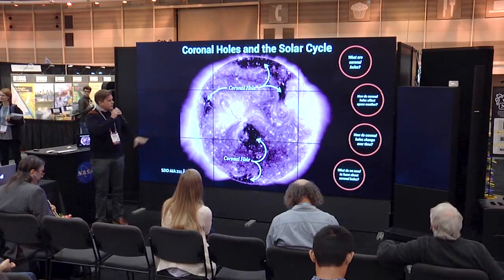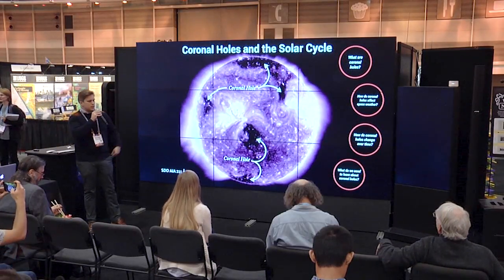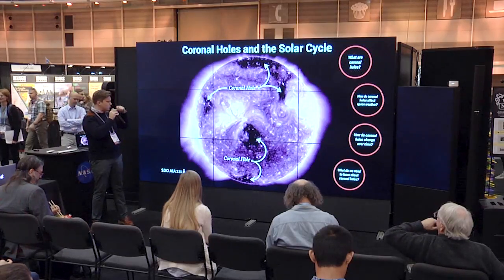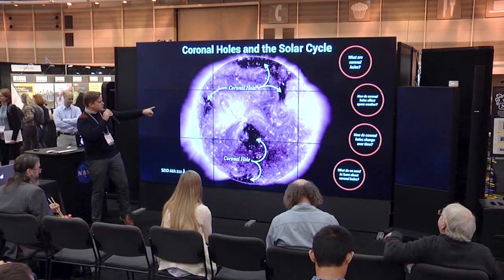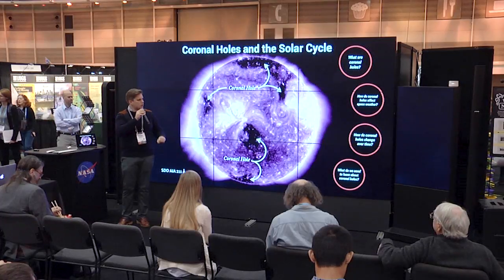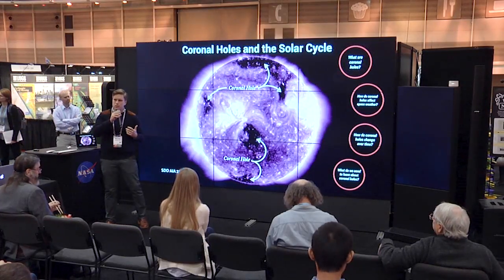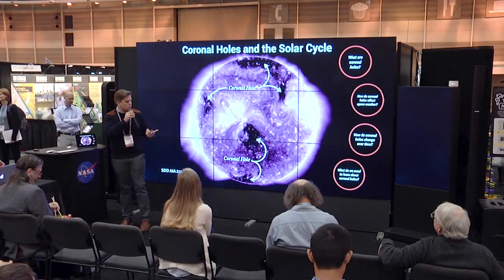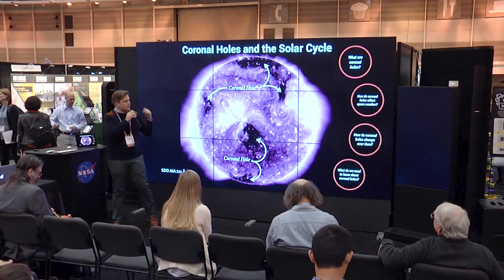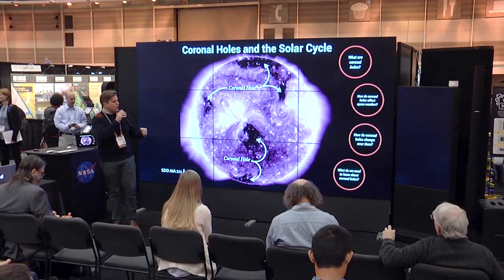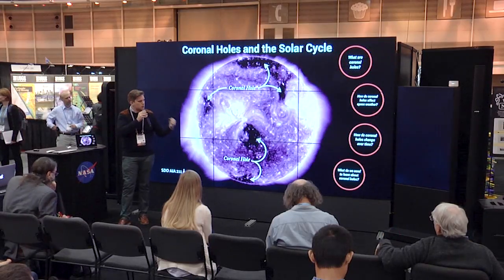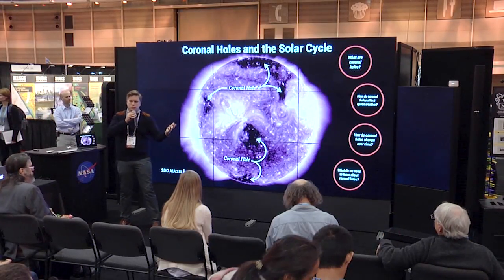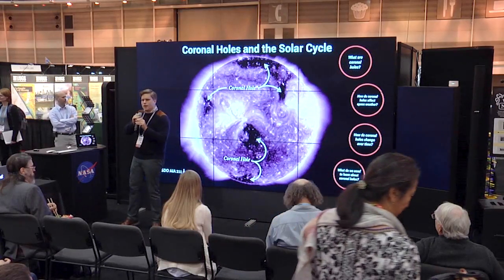If we take a picture of our Sun — this image taken with the AIA instrument at 211 angstroms — you can see these dark patches on the Sun that occur at different latitudes, at different locations in the North Pole and South Pole. These are all called coronal holes. What I want to talk about is what they are, how coronal holes affect space weather, how they change over time, and what we still have to learn about them.